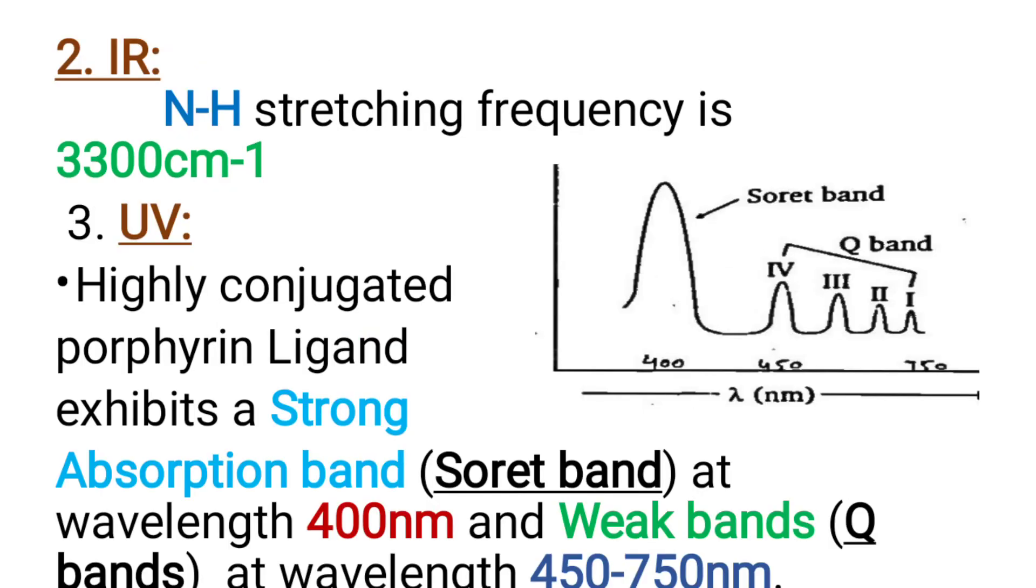Next we will discuss the IR spectrum of porphyrin complex. The NH stretching frequency is 3300 cm inverse. The presence of NH bond in porphyrin shows a peak at 3300 cm inverse.